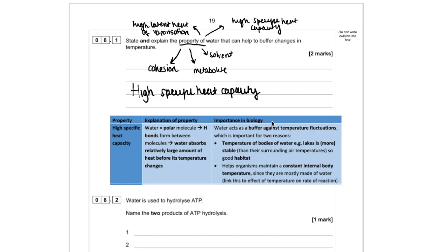And I know it's not talked about in this question, but just so you understand the importance of having a high specific heat capacity in order to buffer against temperature fluctuations, it's important for bodies of water, like lakes, means that they make good habitat.